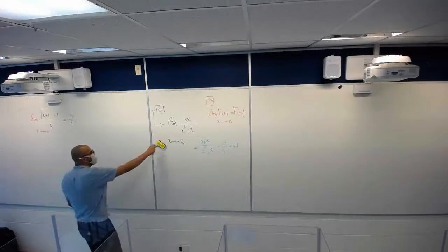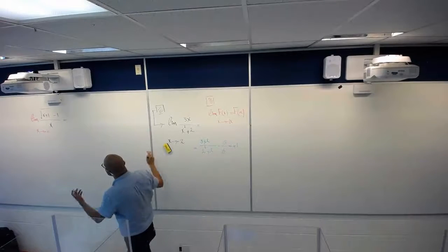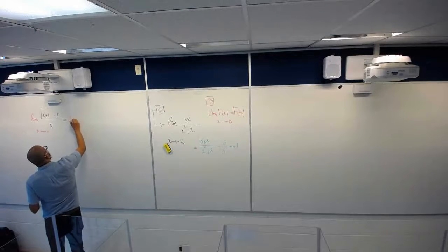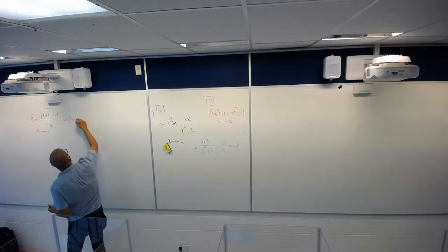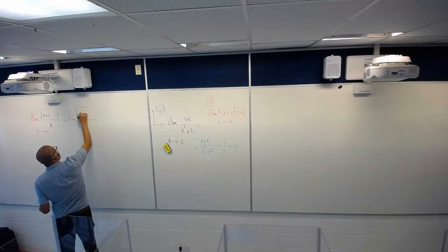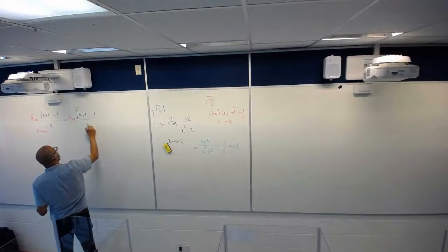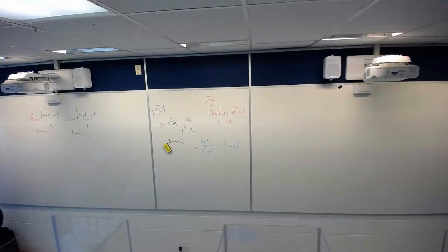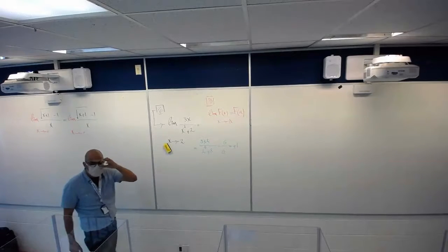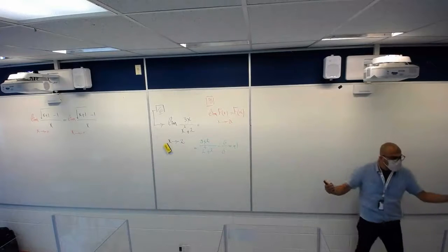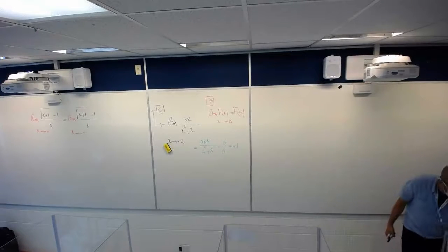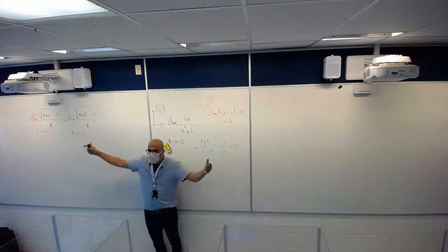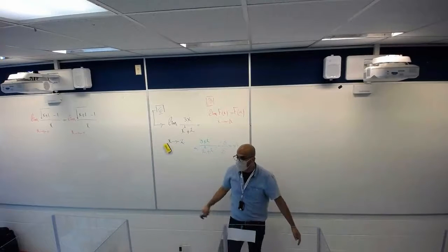You cannot just do a direct substitution for this type of function — you have to use some kind of strategy. One of those strategies we taught: we write the limit as it is, the limit as x goes to zero of the square root of x plus 1 minus 1 over x. What do you think is the best strategy? Gabriel said we have to use the conjugate to solve this one.